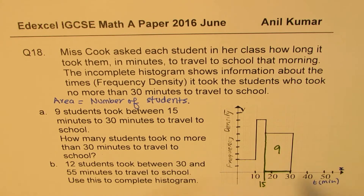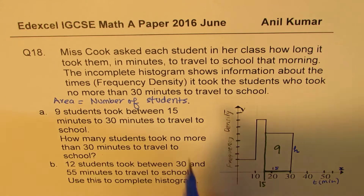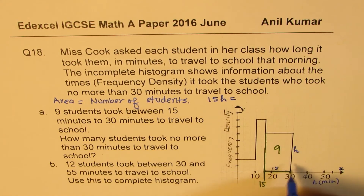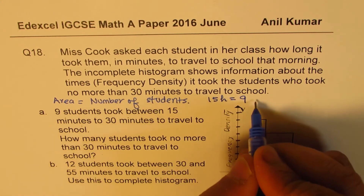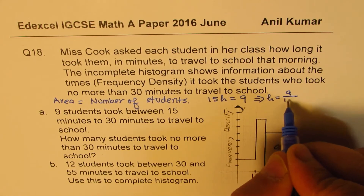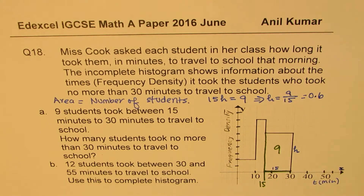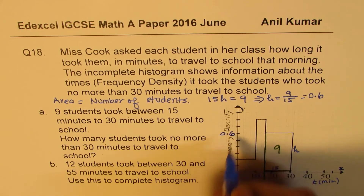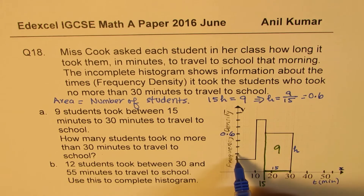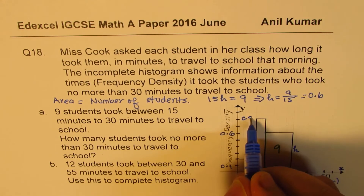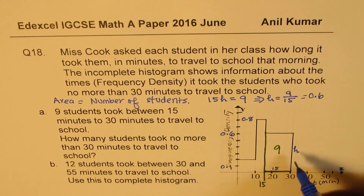So in this case, what is this area? Between 15 to 30, this length is 15, and we don't know what the height is. So 15 times H should give us 9, because there are 9 students. This gives the height H as 9 divided by 15, which in decimals is 0.6. So that mark is 0.6. Counting the grid divisions, each is 0.1, so the highest mark here will be 0.8.